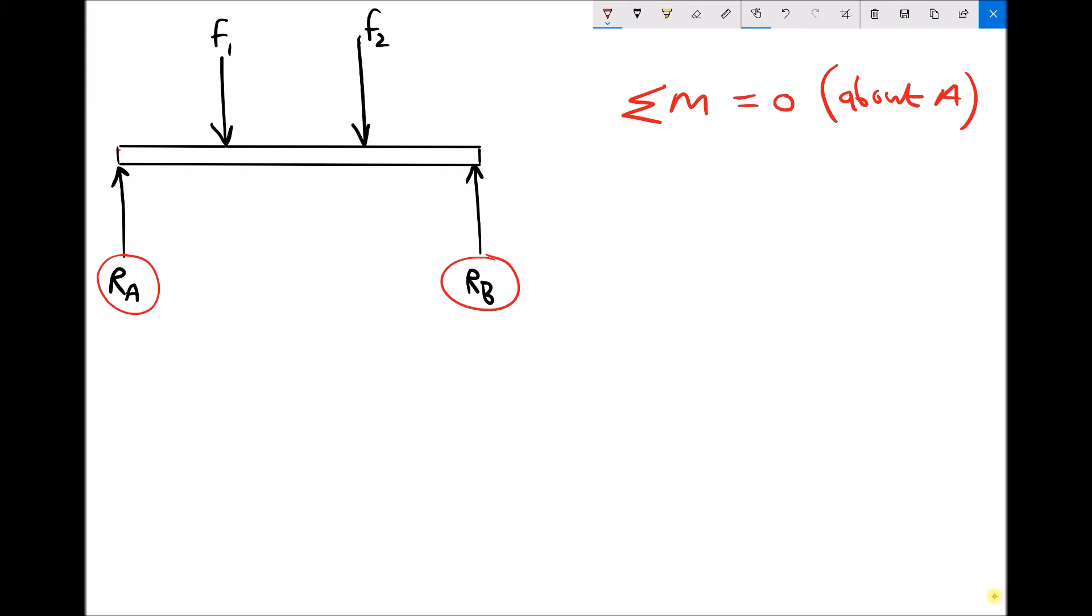If we take turning moments about support A then what you'll notice is that the force at A isn't going to cause a turning moment, because a turning moment is a force times a distance. We've seen this previously written a different way: the sum of the forces times their perpendicular distances equals zero. What we're saying here is that the reaction at A is not offset at a distance from the pivot. So that eliminates the reaction at A from any of our calculations.